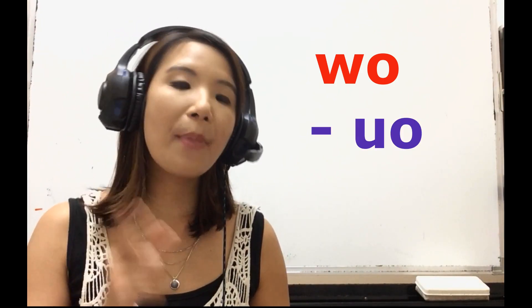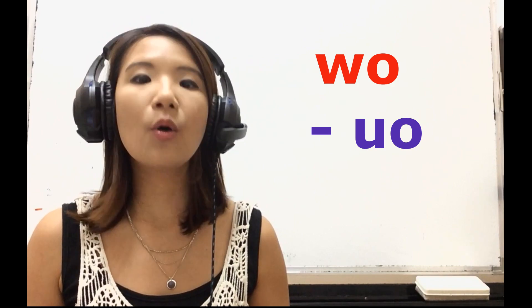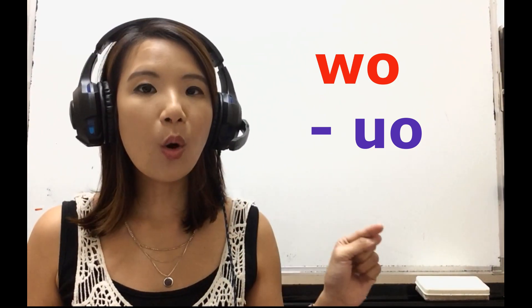The 'wo' sound — when it's alone, it spells W-O: 'wo'. When we practice, we use the first tone: wo, wo. So when it's alone, that's W-O, but when it's with an initial, it spells U-O. We still say 'wo'.